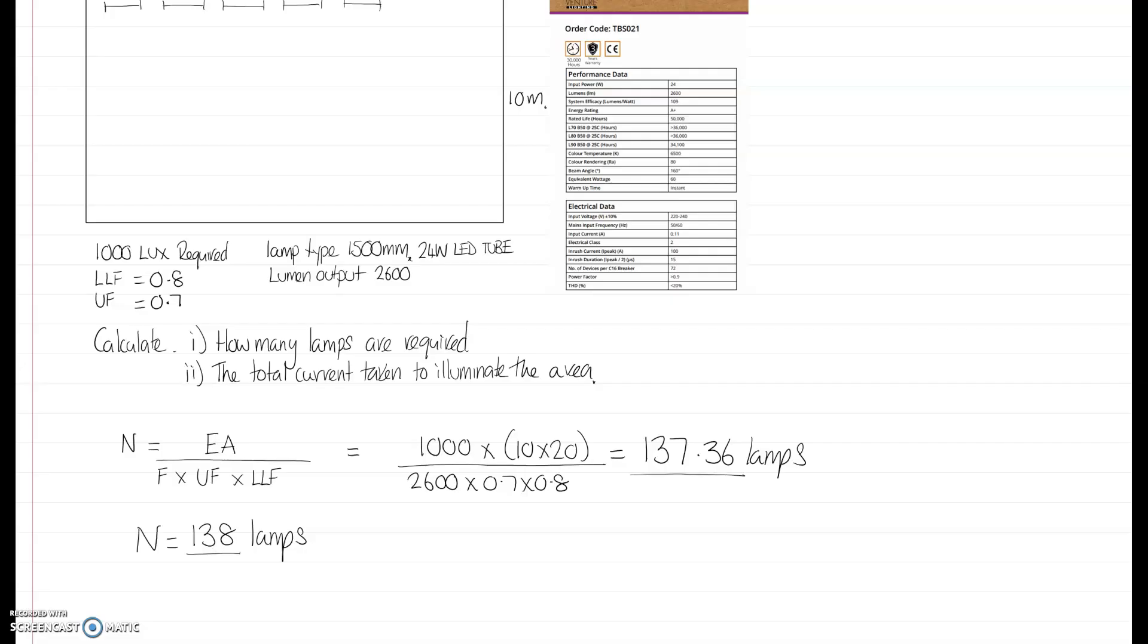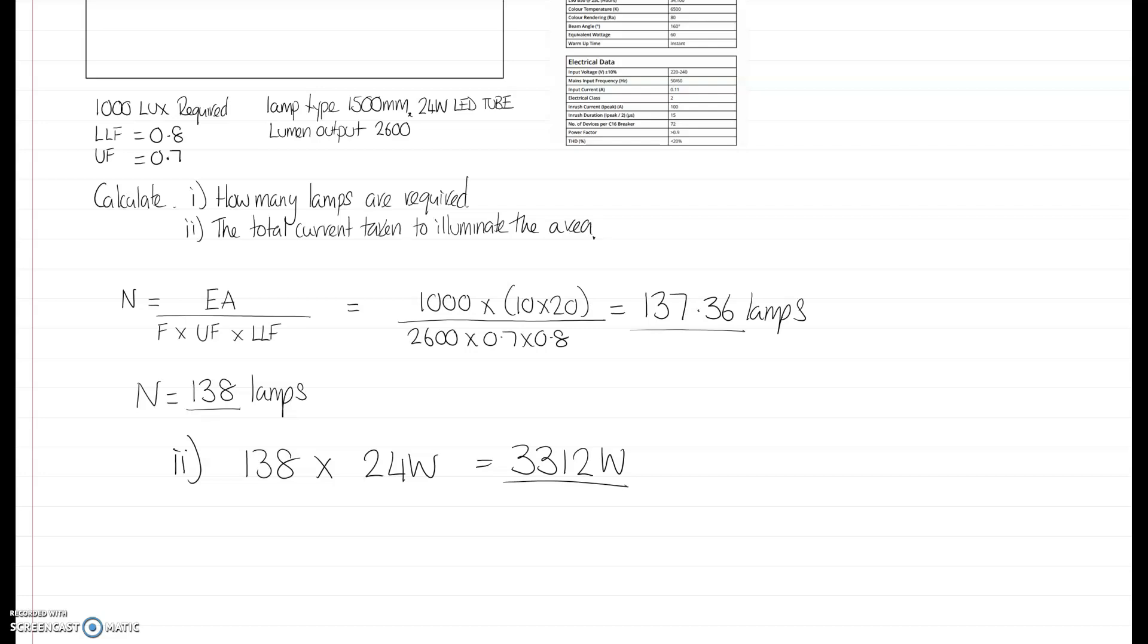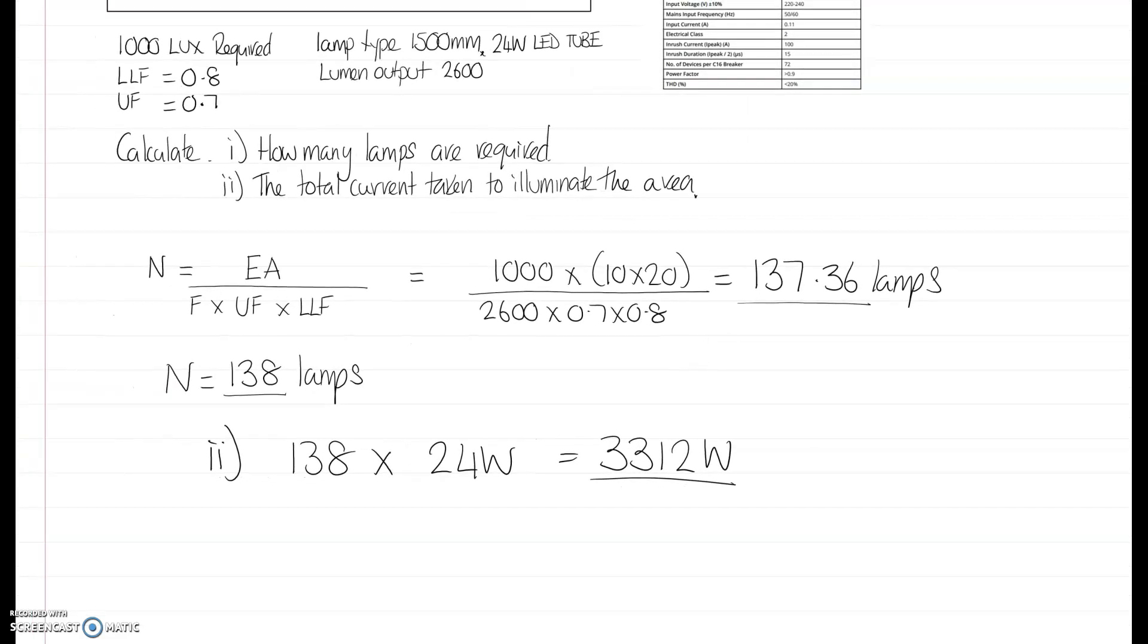How much current is that going to take then? Well, if there's 138 lamps, so we've got 138 lamps times the input power which is 24 watts. So we get a total power of 3.31 kilowatts, which is quite a bit. But obviously we do that over three phases, but we'll stay with one phase for now.